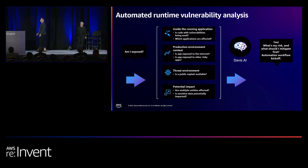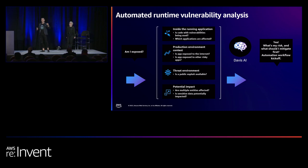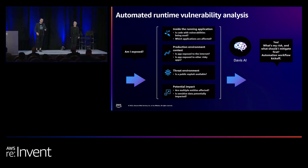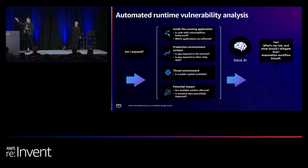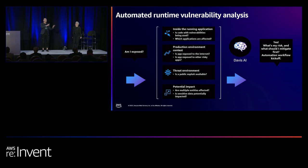Let's talk about automated runtime vulnerability analytics. The first question we always ask when it comes to vulnerabilities is: am I exposed? That question can mean many different things — is the code with the vulnerability being used? Is the vulnerability exploited to the public internet? Are multiple entities affected? It's such a loaded question. And if you don't have a true understanding of your environment, if you don't know how it's architected or where all the transactions are flowing, it's impossible to answer these questions. And if you can't answer them, you can forget about automation.